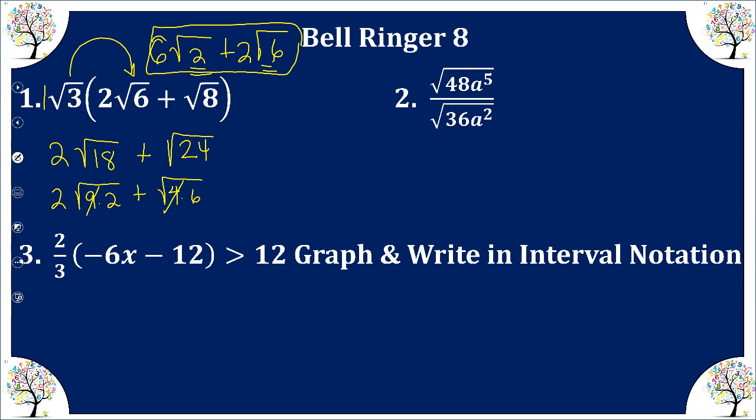Number two, we're going to simplify the numerator and denominator. Notice our denominator is a perfect square. So I take the square root of 36, which is 6, and the square root of a squared is a.